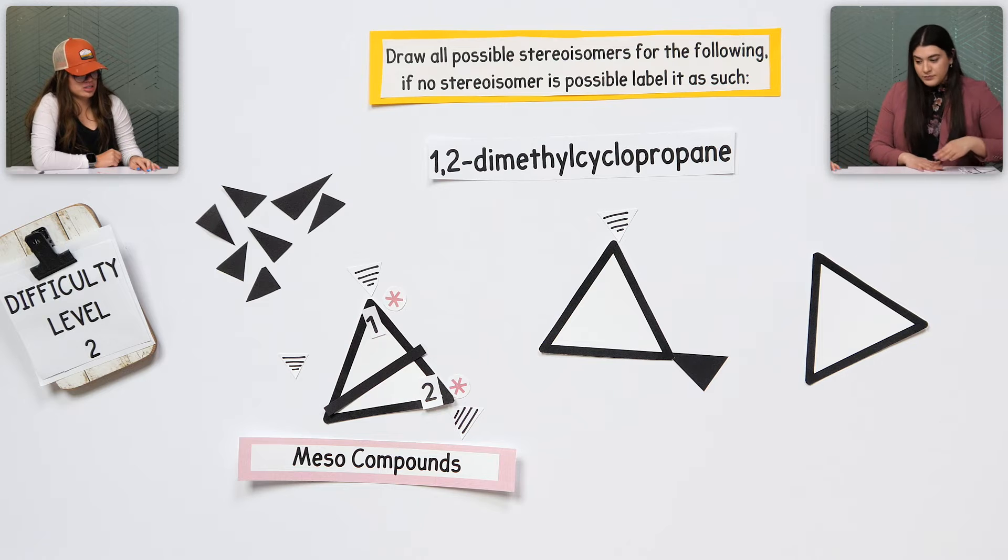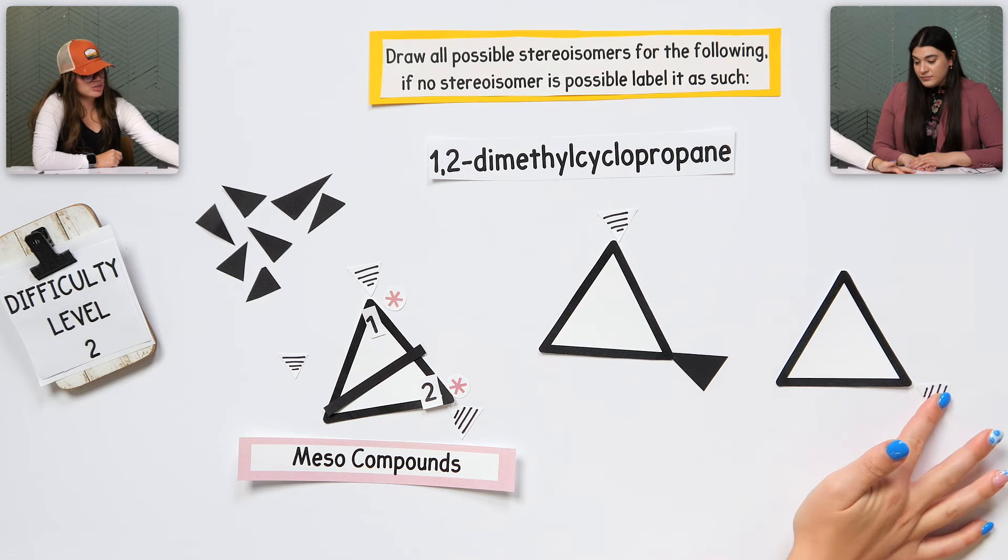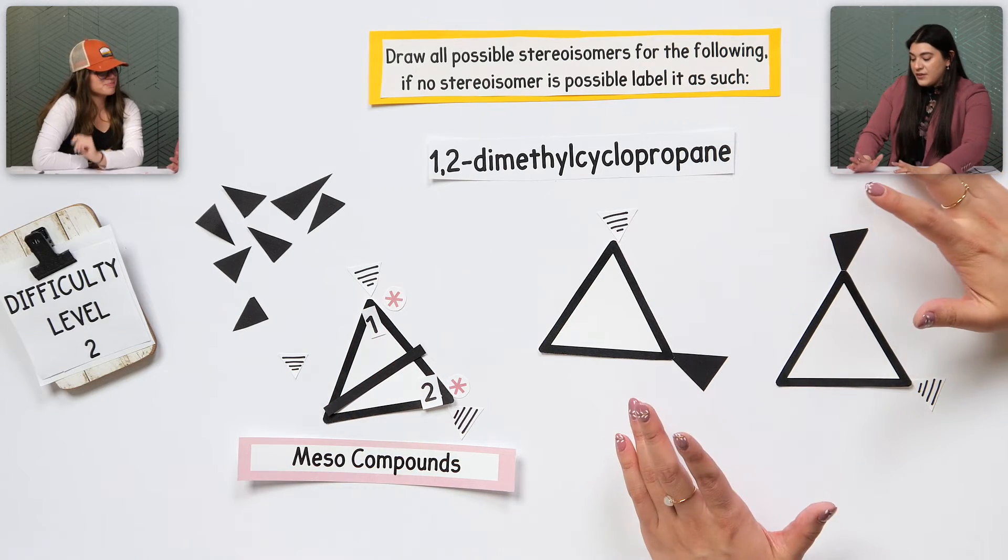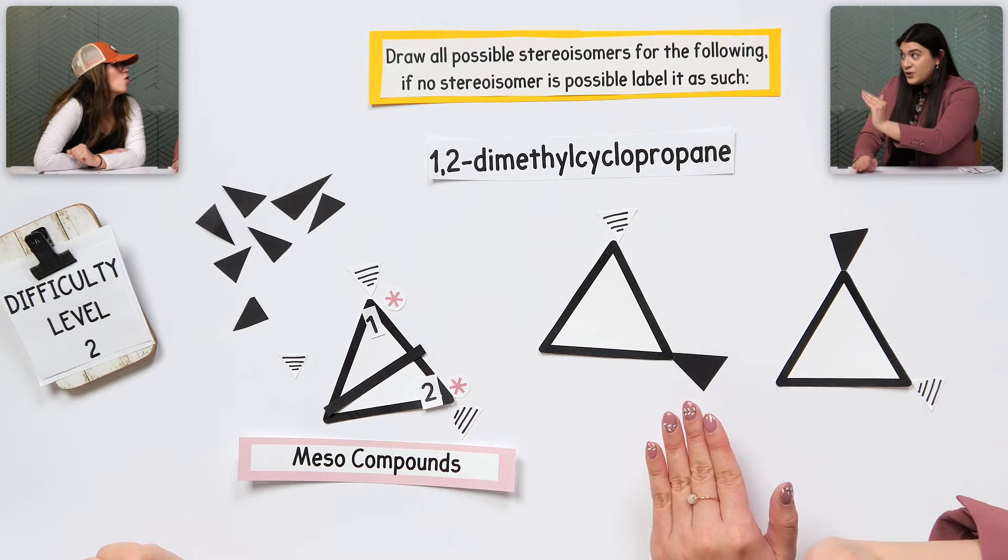And then technically, can I do the same thing, like a dash here and a wedge here? How does that work, though? I don't know why that, why is that? Thank you. The reason why it would be different is because this one is pointing away from you. This one is pointing towards you. Oh, so it's a different structure.